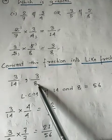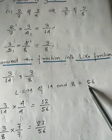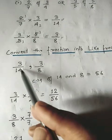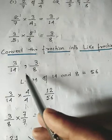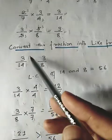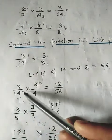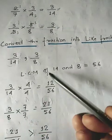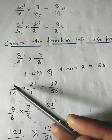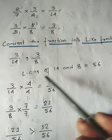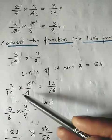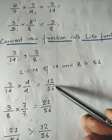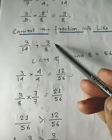The LCM of 14 and 8 is 56. We need to make both denominators 56. For the first fraction 3/14, divide 56 by 14 — the answer is 4. Multiply both numerator and denominator by 4: 4 threes are 12, and 4 fourteens are 56. So 3/14 becomes 12/56.